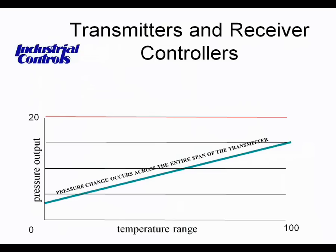What we also want to point out here is that you need to pick the right transmitter for the proper application. With a temperature range of 0 to 100, this specific transmitter would not be applicable for, for example, hot water, because the temperature of hot water would always be more than 100 degrees. So we wouldn't get that temperature-pressure relationship that we're looking for.